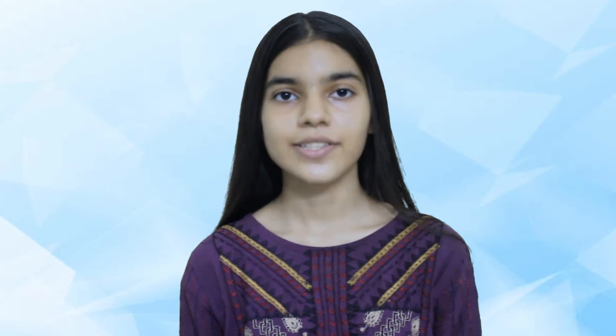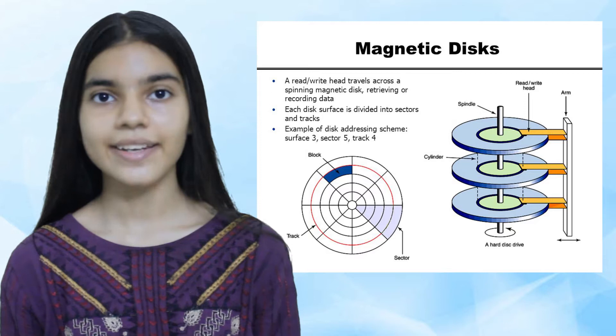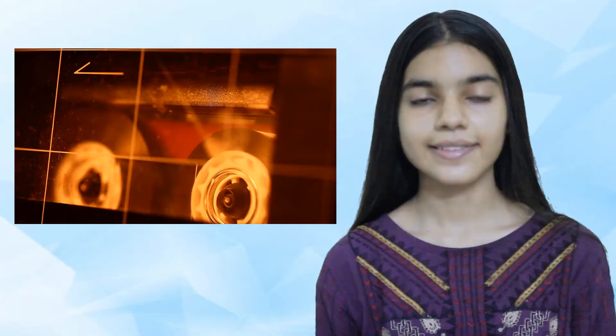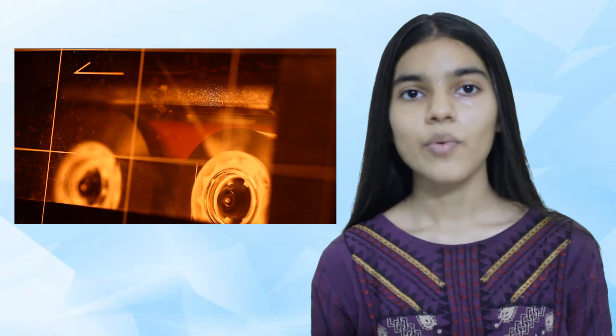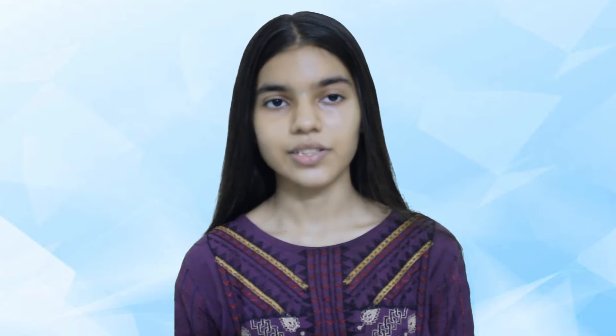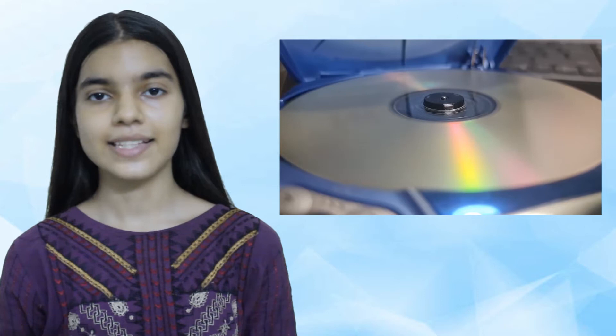Magnetic storage media and devices store data in the form of tiny magnetized dots. These dots are created, read, and erased using magnetic fields created by very tiny electromagnets. In the case of magnetic tape, the dots are arranged along the length of a long plastic strip coated with a magnetizable layer. In the case of magnetic disks, such as floppy disks or hard drives, the dots are arranged in circles on the surface of a plastic, metal, or glass disk that has a magnetizable coating.